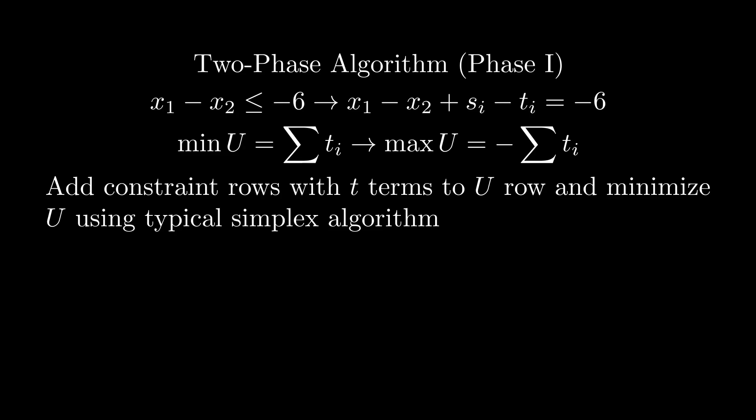We then define a new objective function u, which is the sum of all these t variables, where the goal is now to minimize this quantity. Note that we keep the original objective function in this new modified tableau to transform it into the desired form for the second phase of this algorithm. However, we don't actually want to use this row for pivot selection. To minimize u, we now convert it into a maximization problem as follows. We then add every constraint row with t terms to this row to eliminate the non-zero t coefficients. Applying the simplex algorithm from before allows us to minimize u, giving us a valid, basic, feasible solution.